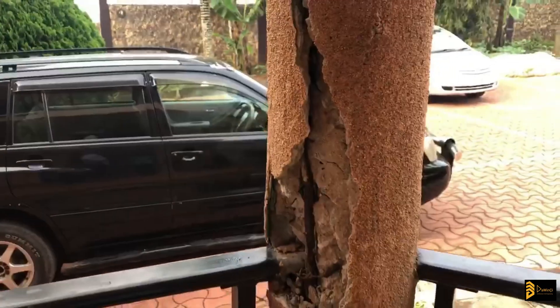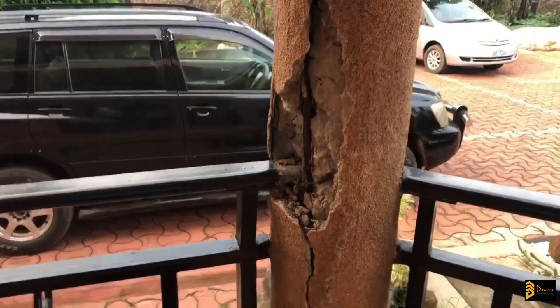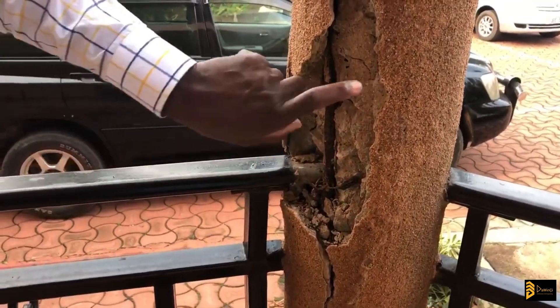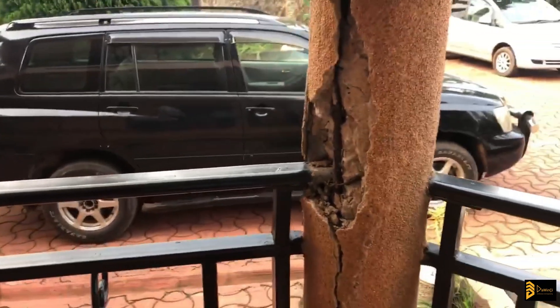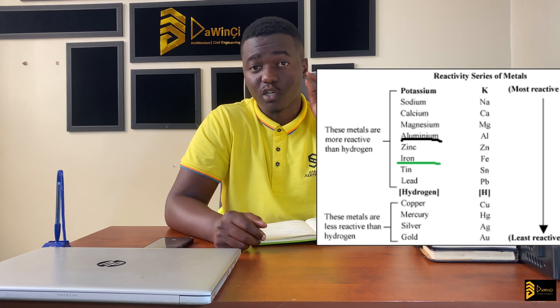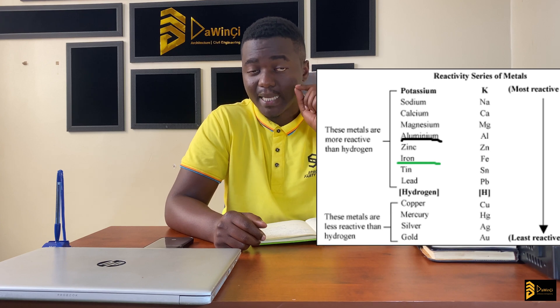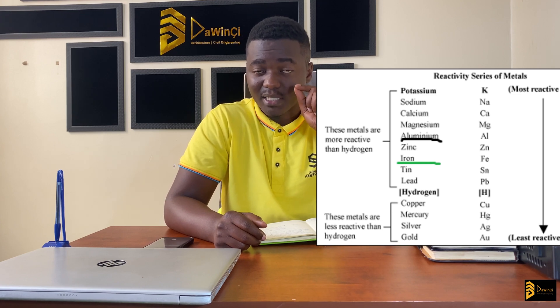Steel is not actually a pure metal — it is an alloy that contains about 97% iron, which is why steel bars are often called iron bars. The remaining roughly 3% is impurities and traces of carbon. So when we talk about steel bars, we are essentially talking about iron. And when you compare the position of iron and the position of aluminium in the electrochemical series, aluminium is higher than iron — and that is where the chemistry starts.